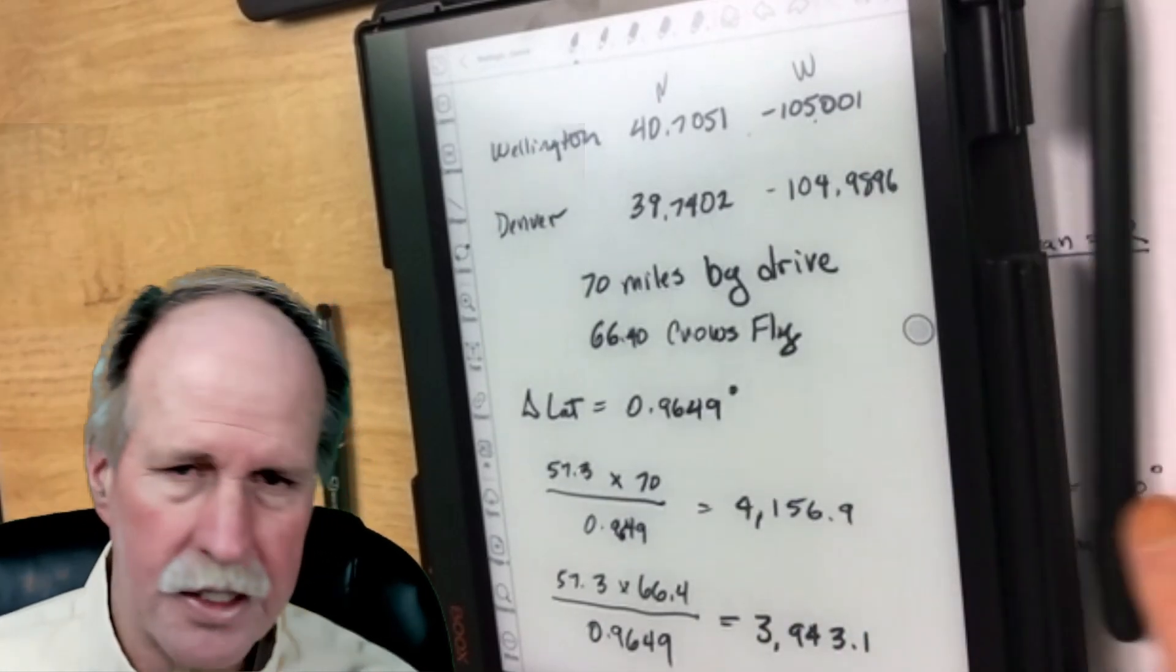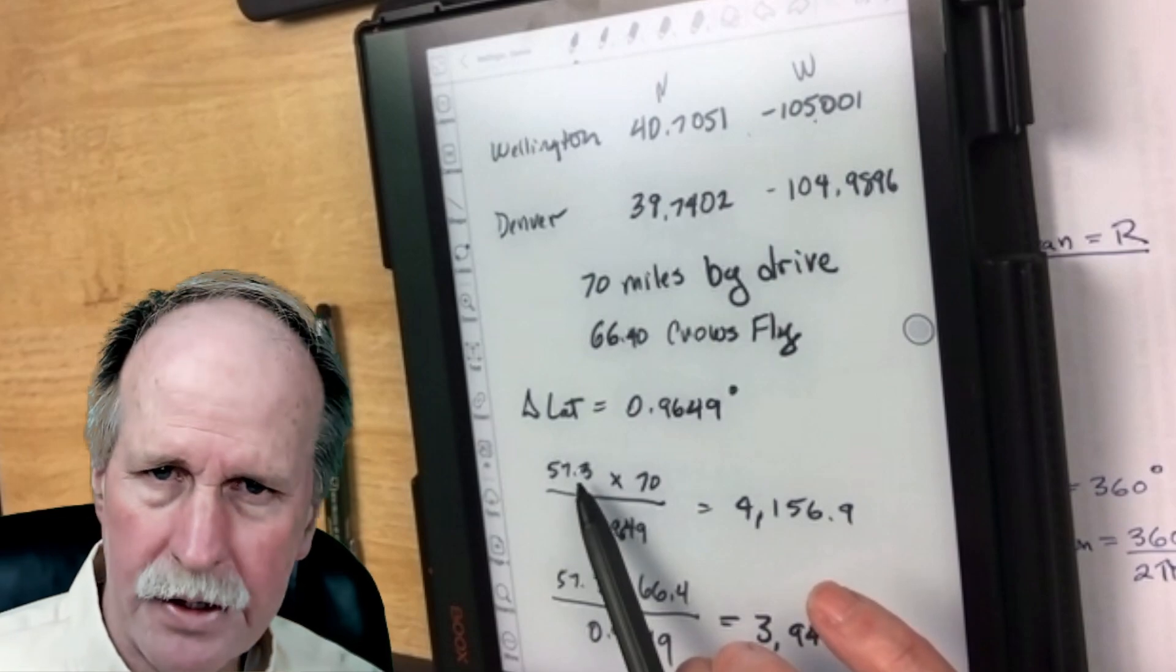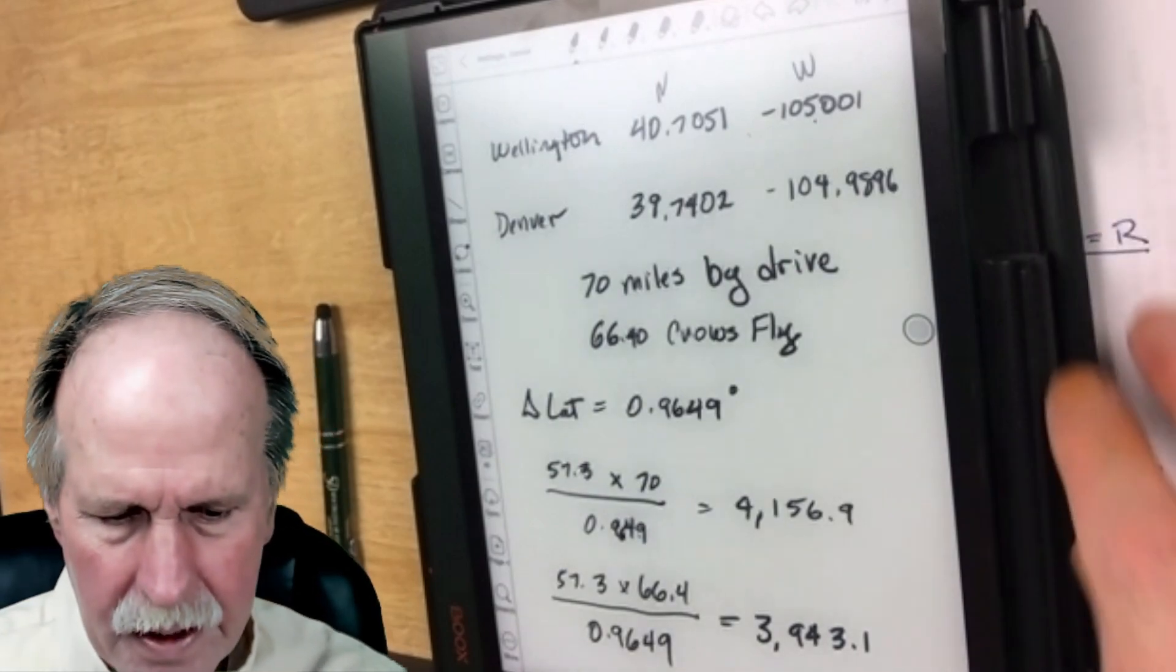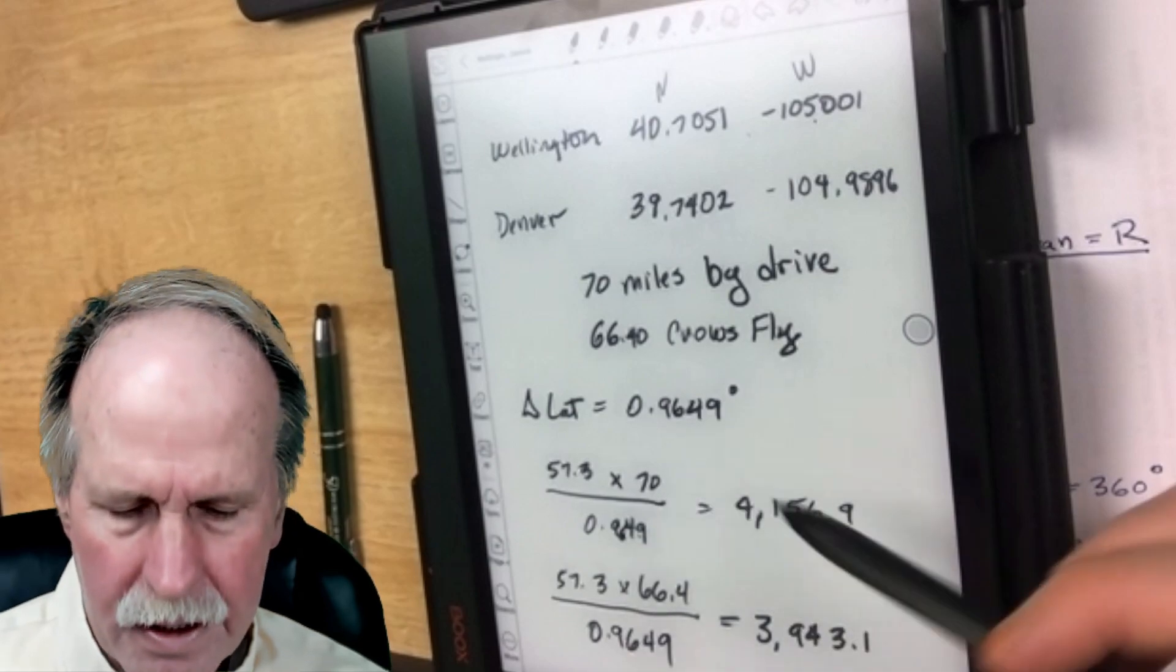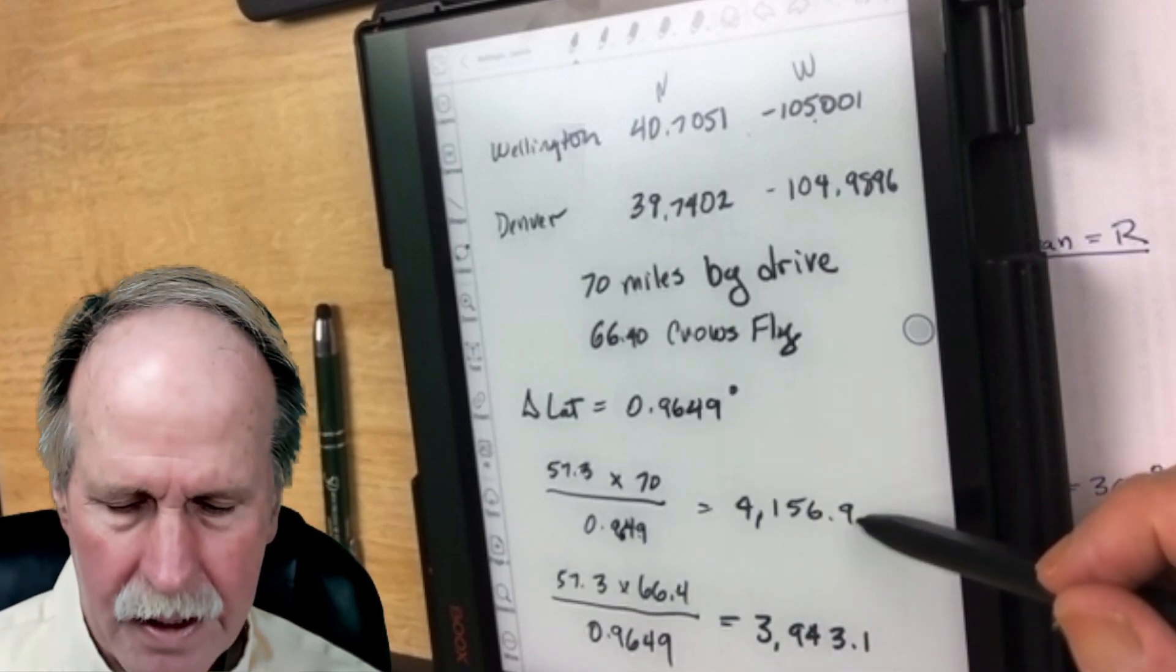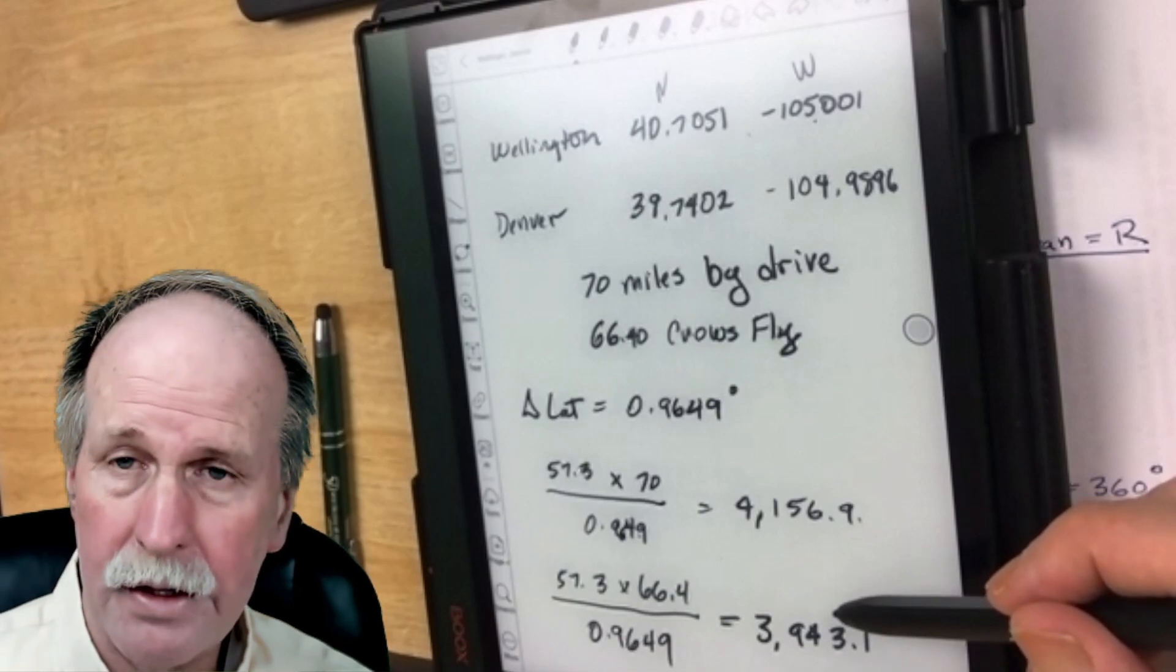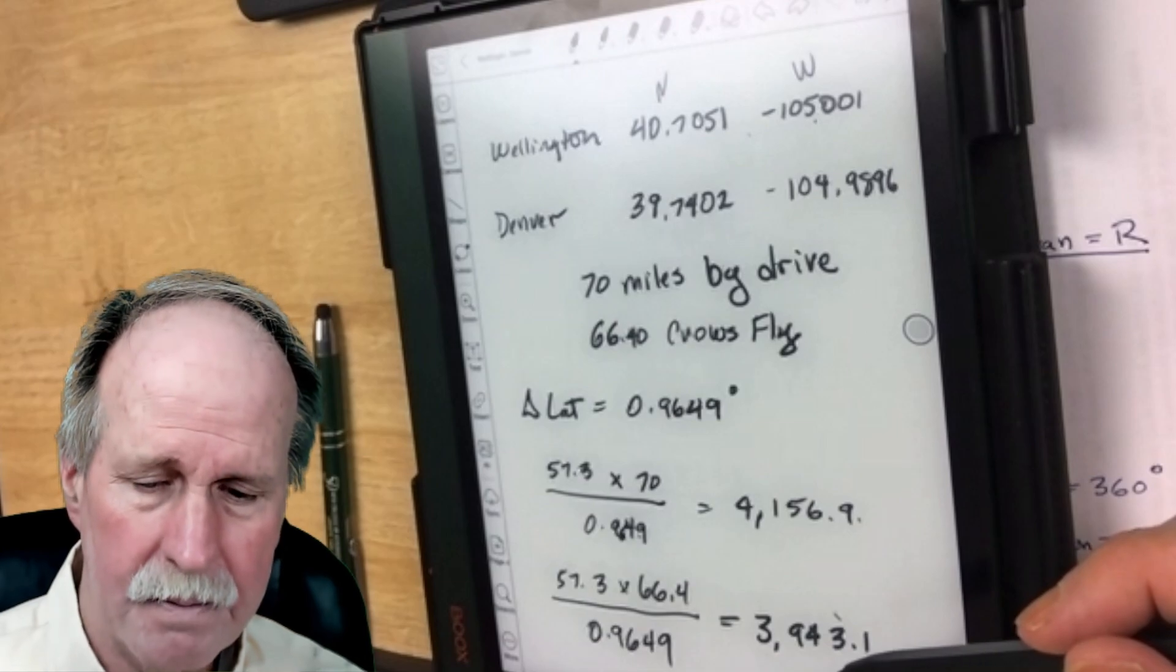How do we figure this out? What we do is we divide one radian, which is 57.3 degrees, by the change in latitude and then multiply it by the distance that we drove. So if the distance is truly 70 miles, the radius of the earth is 4156.9 miles. However, if you look at the actual distance between those two points of 66 miles, we calculate a radius of 3943 miles. The accepted radius on average is about 3959 miles.